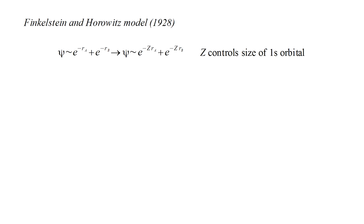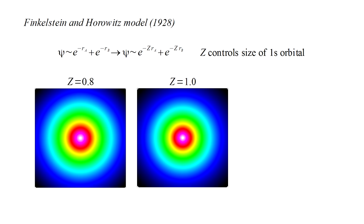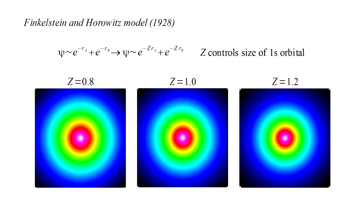Finkelstein and Horowitz multiplied these distances by a parameter z, which controls the size of the 1s orbitals. For z equals 1, they are the same functions we have been using. Decreasing z expands the orbital. Increasing z compresses the orbital.